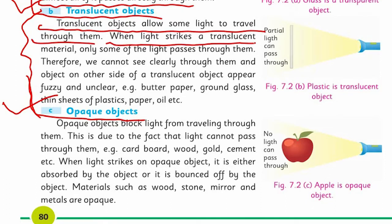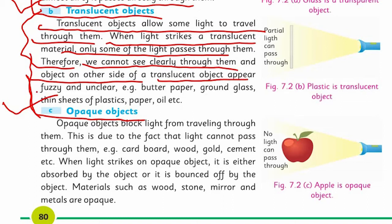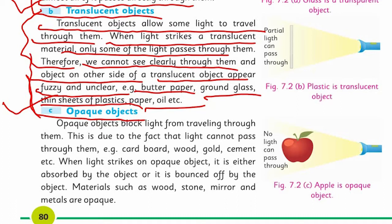Translucent objects allow some light to travel through them. When light strikes a translucent material, only some of the light passes through, so we cannot see clearly through them and the object on the other side appears fuzzy and unclear. Examples include butter paper, ground glass, thin sheet of plastic, and oil. Translucent glass is used when we want some light to come in without complete darkness, but without a clear view.